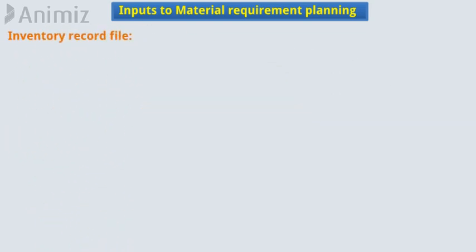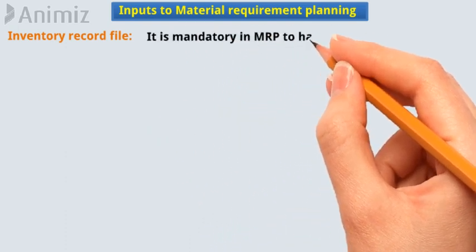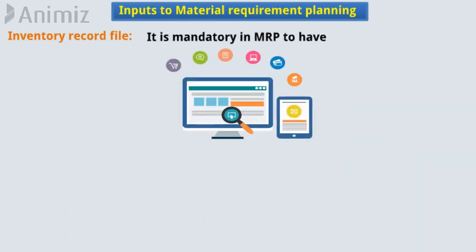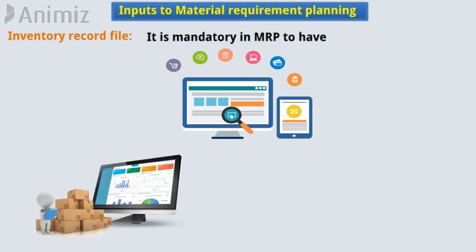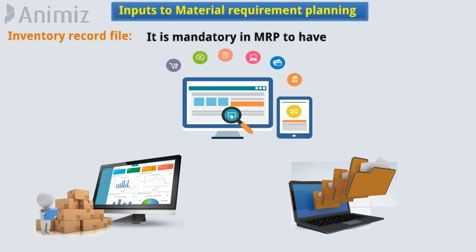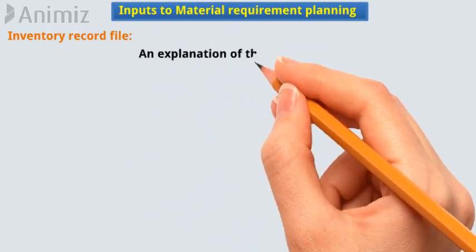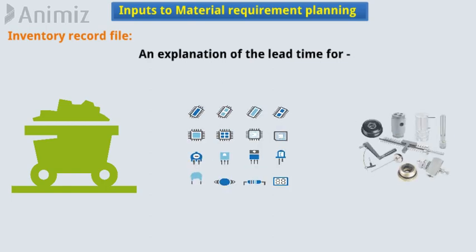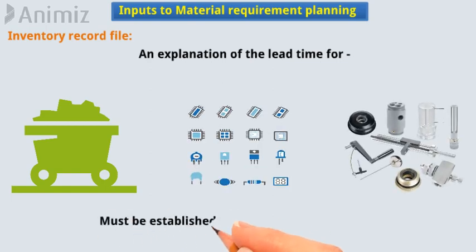Inventory record file: It is mandatory in MRP to have accurate current data on inventory status. This is accomplished by utilizing a computerized inventory system that maintains the inventory record file. An explanation of the lead time for the raw material, components, and assemblies must be established in the inventory record file.